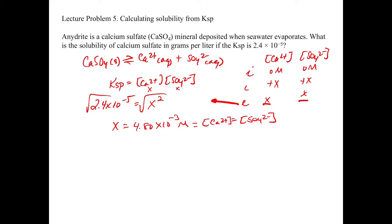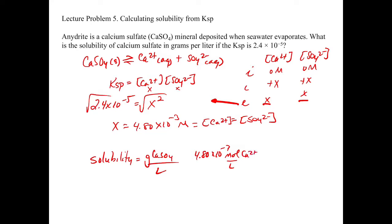So now, if the problem was asking for the concentration of either one of those ions, you'd be basically done at this point. However, the problem is asking for the solubility in grams of calcium sulfate per liter. So what we have to do is convert our 4.80 times 10 to the minus 3 moles per liter of calcium 2+ into grams per liter of calcium sulfate.